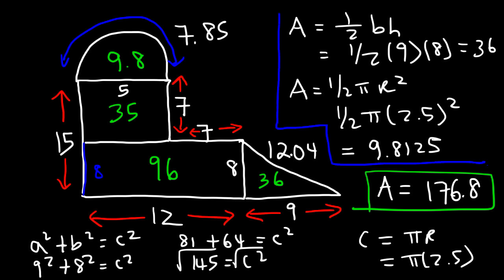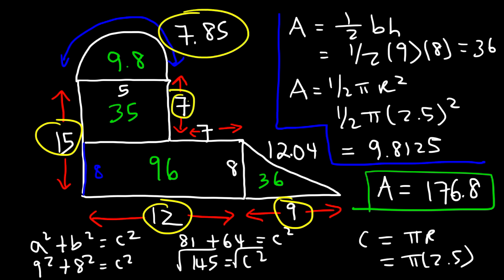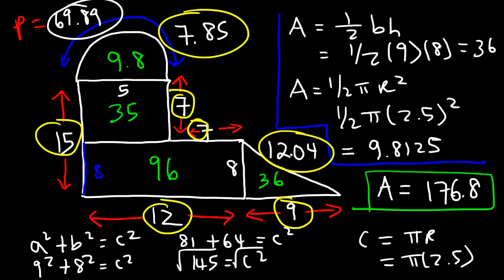So now we need to add up everything to find the perimeter. We need to add 9, 12, 15, 7.85, 7, 7, and 12.04. 12 and 9 add up to 21, and then once you add 15, that's 36, plus 7.85. Then adding 7 and 7 and 12.04, you should get a perimeter of 69.89 units.